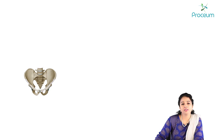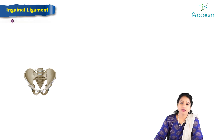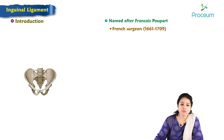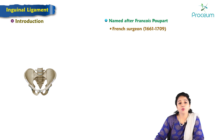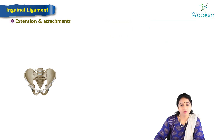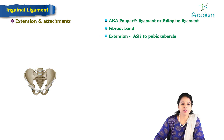Dear students, today's topic is on the inguinal ligament. The inguinal ligament is named after Francois Poupart, a French surgeon who accurately described it. It is otherwise called Poupart's ligament or fallopian ligament, and it is a fibrous band extending from the anterior superior iliac spine to the pubic tubercle.